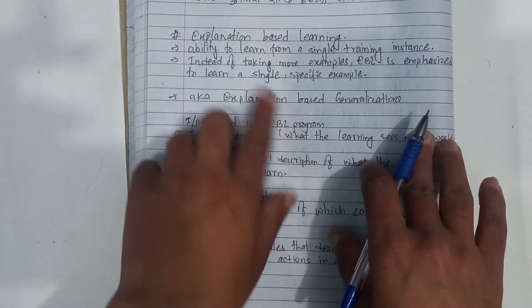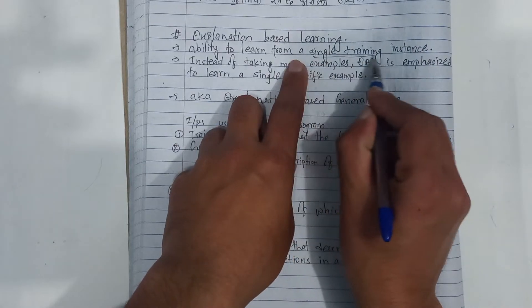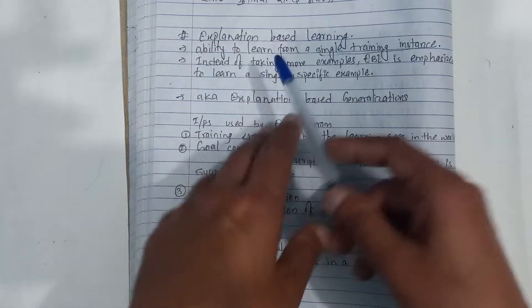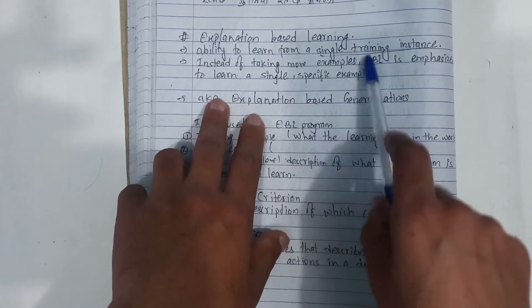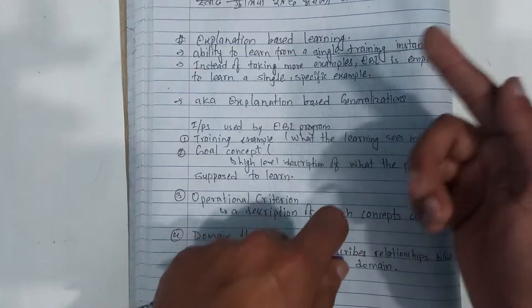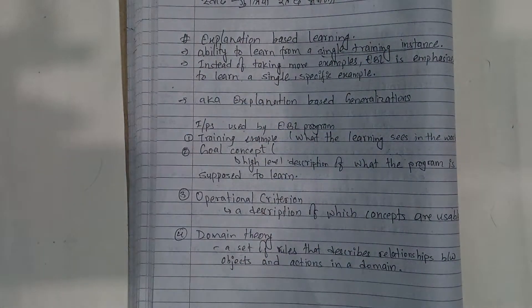What is important? This is the ability to learn from a single training instance. A single training instance can learn the ability. Explanation Based Learning is very important. Instead of taking more examples, EBL is emphasized to learn a single specific example. If you have a single specific example, you can learn the domain to solve the problem.